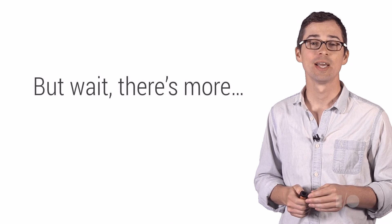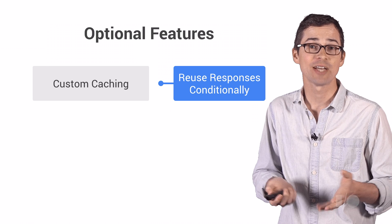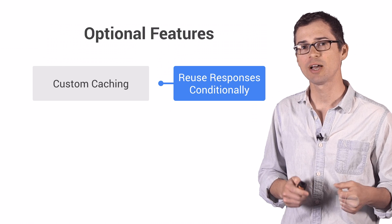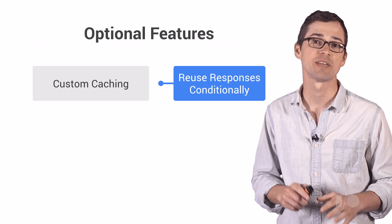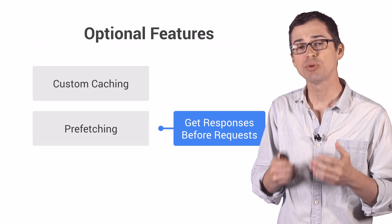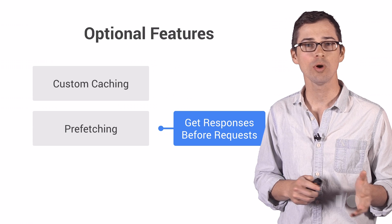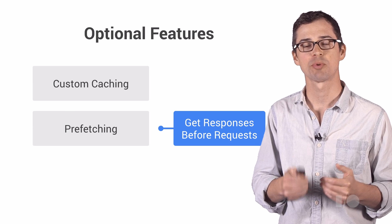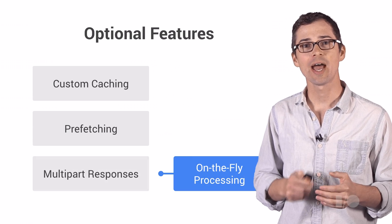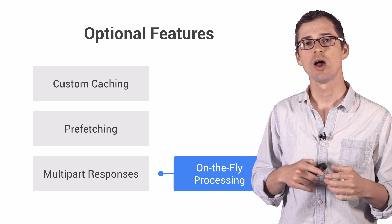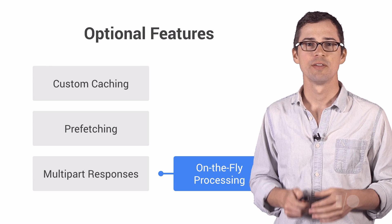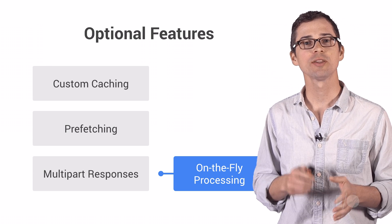Now we won't cover them in depth, but SPF has several optional features that can help you improve your site. In some web apps, HTTP caching is inappropriate, but SPF allows you to cache responses in client memory according to your application-specific parameters. SPF can also prefetch responses automatically or manually to predictively boost performance. And SPF supports streaming multi-part responses in chunks to enable on-the-fly processing, which speeds up navigation by starting the rendering early.